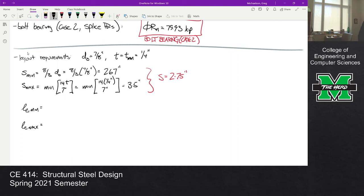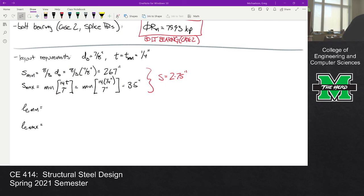As for the edge distance, we have le_min and le_max. Le_min we have to look up from table J3.4, not J3.2. So if I operate my webcam, that is this table right here, table J3.4 on 16.1-132. For 7/8 inch diameter bolts, that is 1 and 1/8.